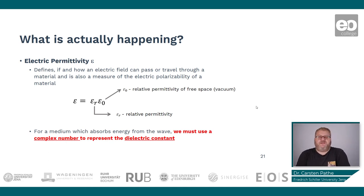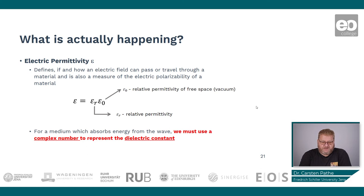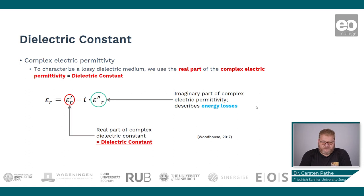The electric permittivity is usually denoted with the Greek letter epsilon. It defines if and how an electric field can pass or travel through a medium, and it is also a measure of the electric polarizability of a material. We have the formula: epsilon equals epsilon r times epsilon zero, where epsilon zero is the relative permittivity of free space or vacuum, and epsilon r is the relative permittivity we are actually interested in. For a medium which absorbs energy from a wave, we have to use a complex number to represent the electric constant. This complex electric permittivity consists of a real part and an imaginary part, where the imaginary part describes the energy losses, and the dielectric constant we are interested in is represented by the real part.